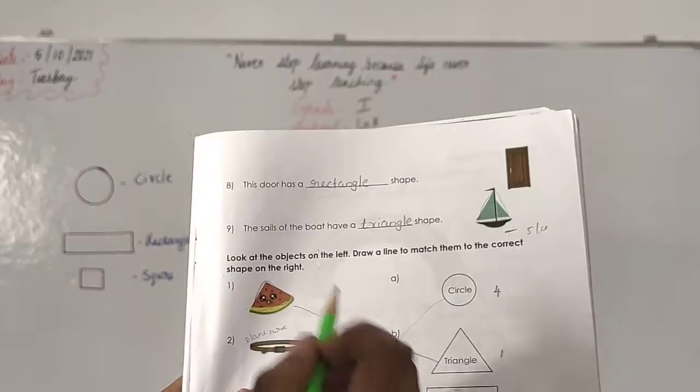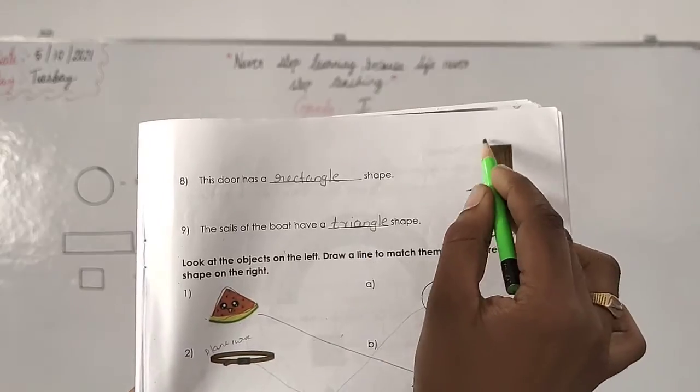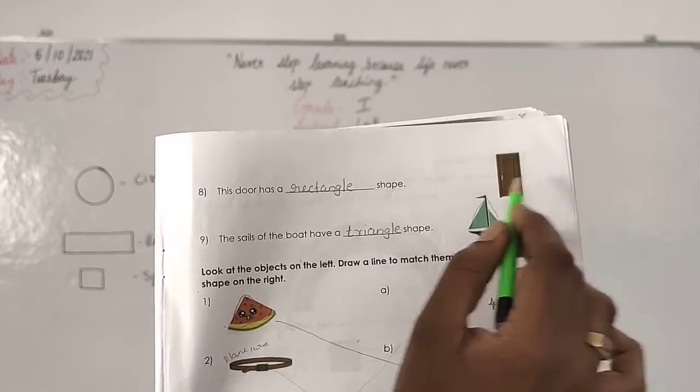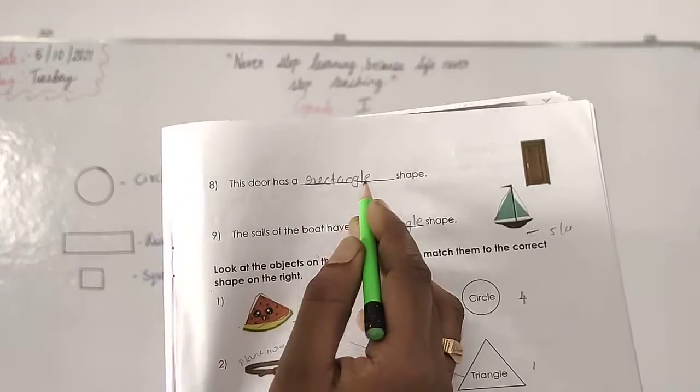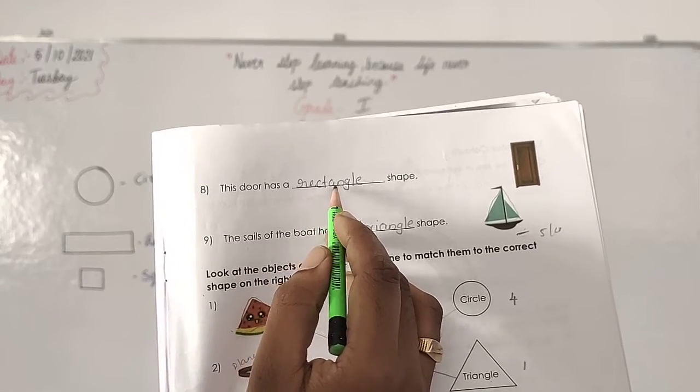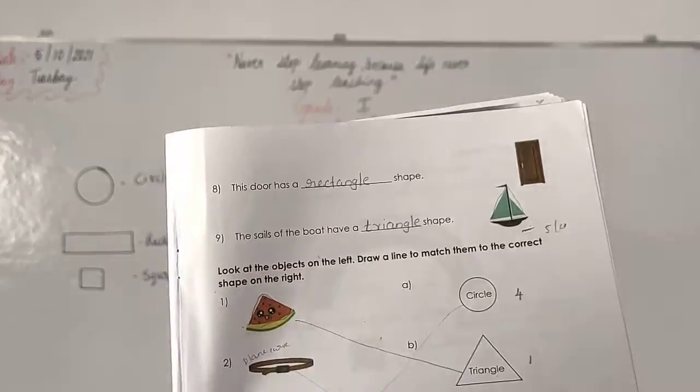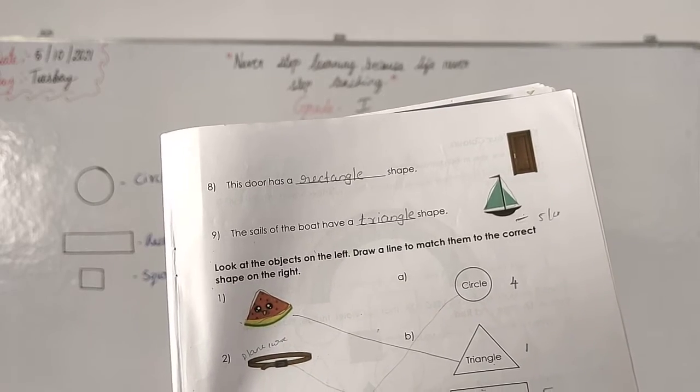Compare to children. Then turn next page. The door has a dash shape. This door. This door is as a rectangle shape. Yes. Write down rectangle. R-E-C-T-A-N-G-L-E rectangle.